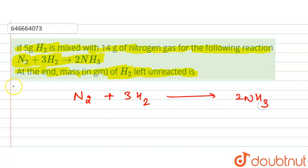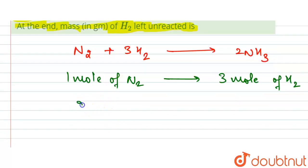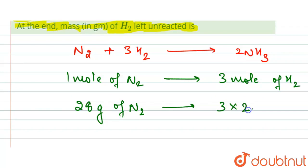From this reaction we can see that one mole of N₂ reacts with three moles of H₂. This means 28 grams of N₂ reacts with 3×2 = 6 grams of H₂.